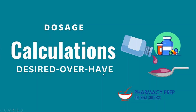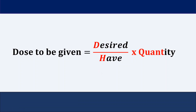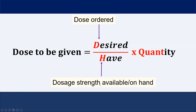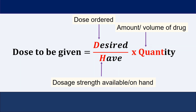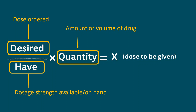Next, let's look at how to calculate dosage calculations using the Desired over Have method. This is one of the most commonly used and effective methods for calculating dose to be administered. Desired is the dose that is ordered; Have is the strength of the drug available on hand; and Quantity is the amount or volume of the drug.